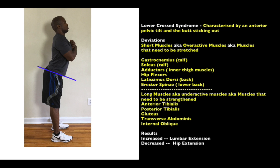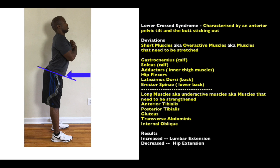The second postural deviation is lower cross syndrome, characterized by an anterior pelvic tilt — essentially sticking your butt out. The overactive muscles that need stretching are, similar to pronation distortion syndrome: the gastrocnemius, soleus (calf), the hip flexor complex, the adductors (inner thighs), the latissimus dorsi, and the erector spinae. The latissimus dorsi and erector spinae should stand out as back muscles — every muscle along the back is tight, while the front is being pulled in.